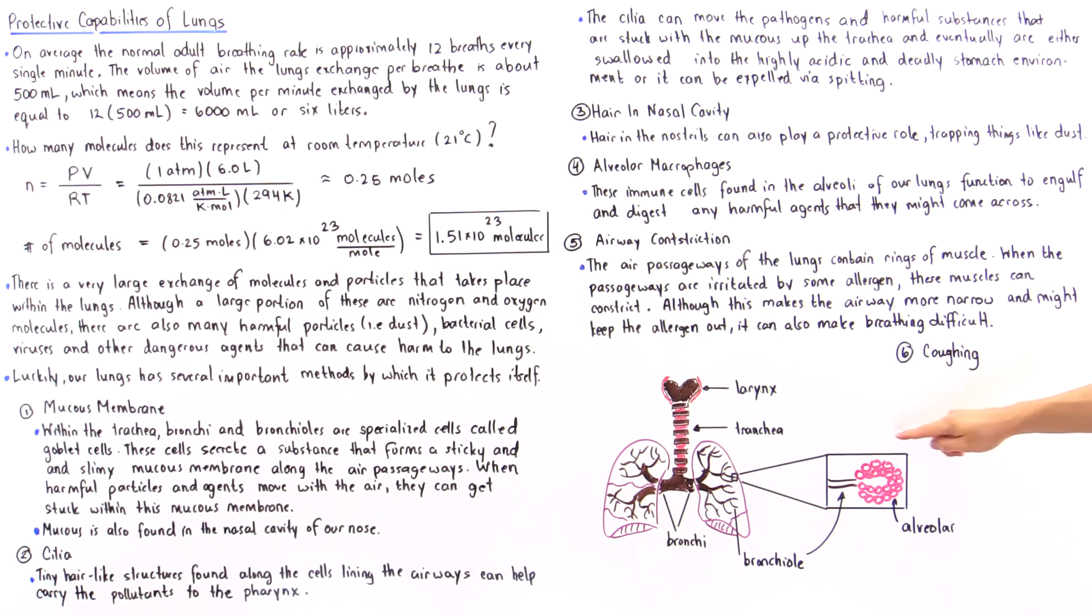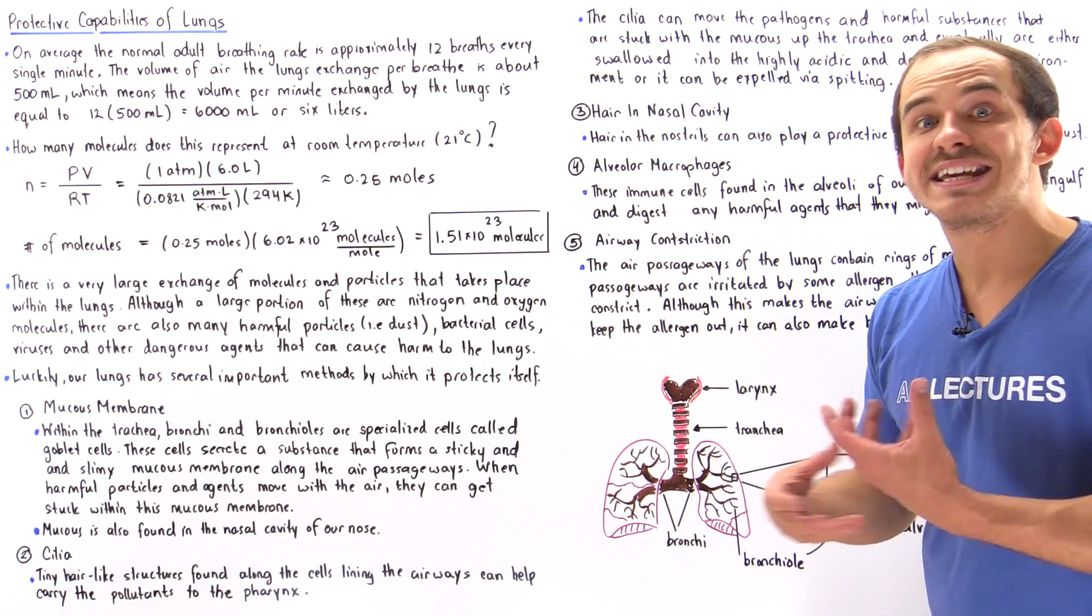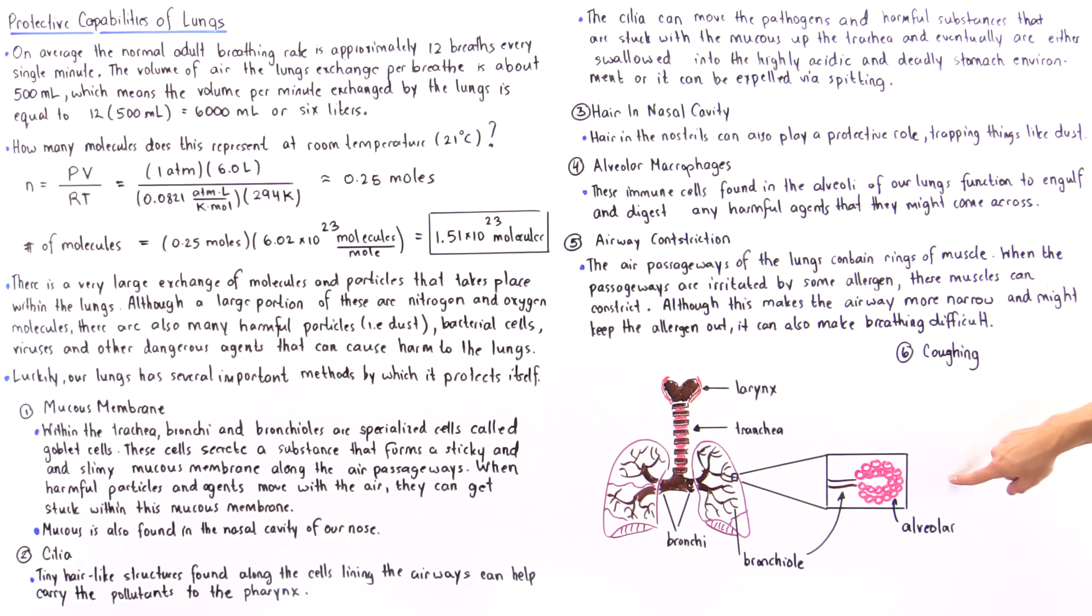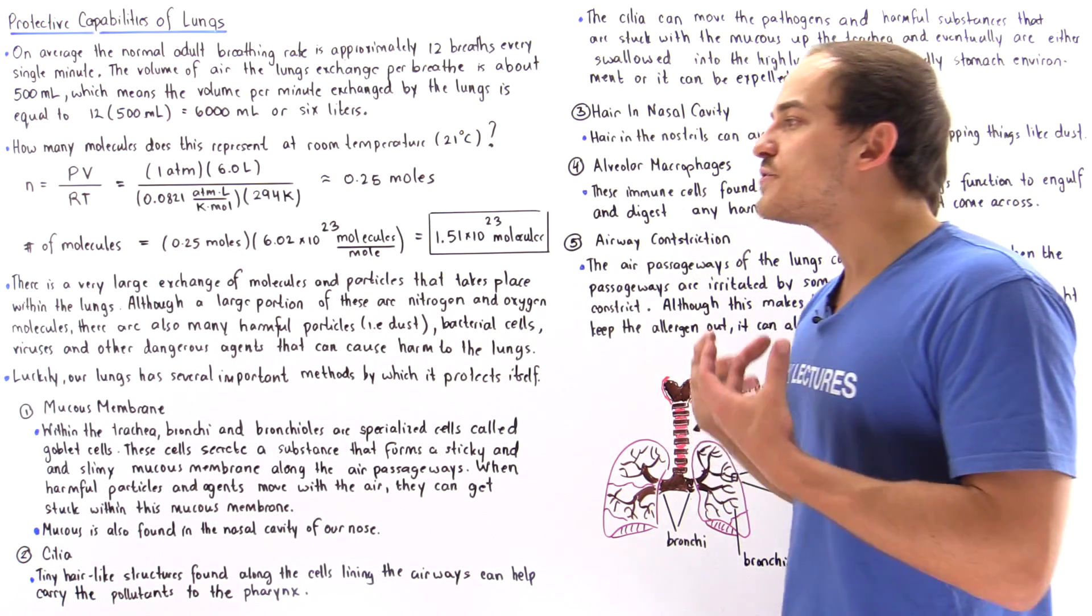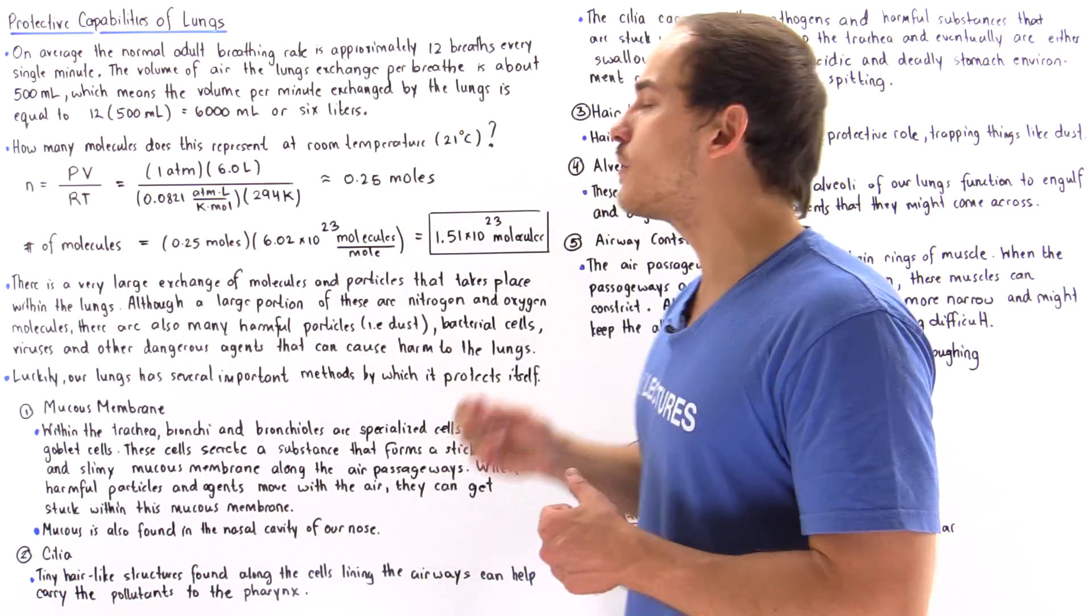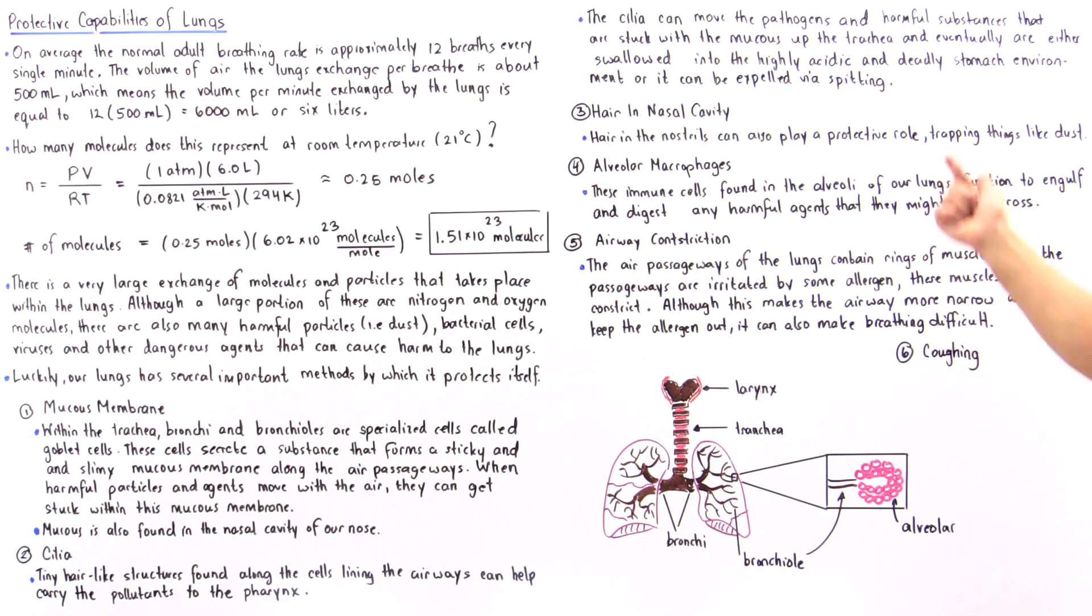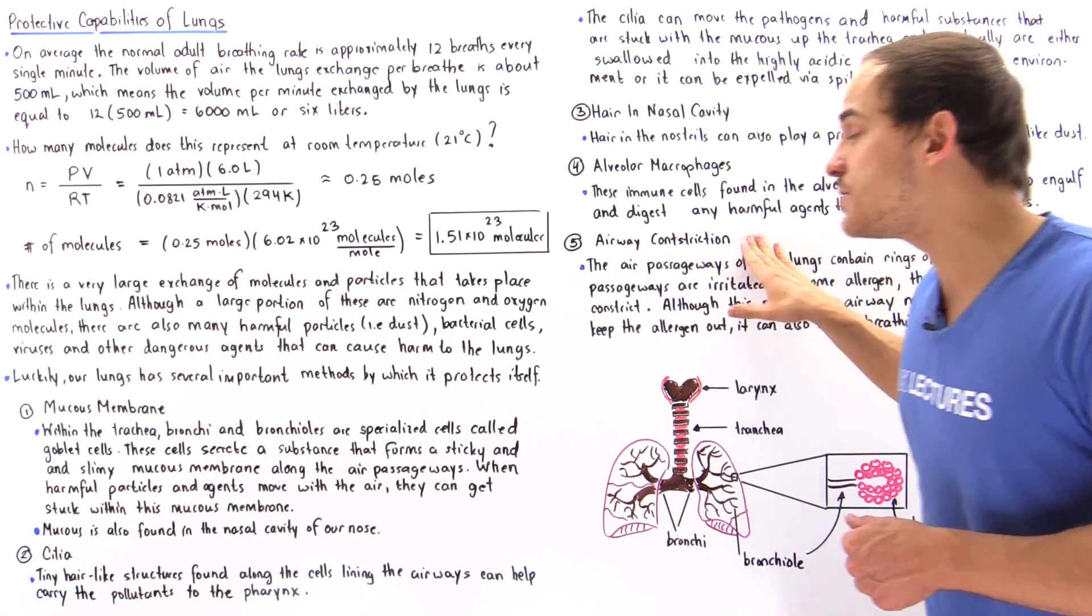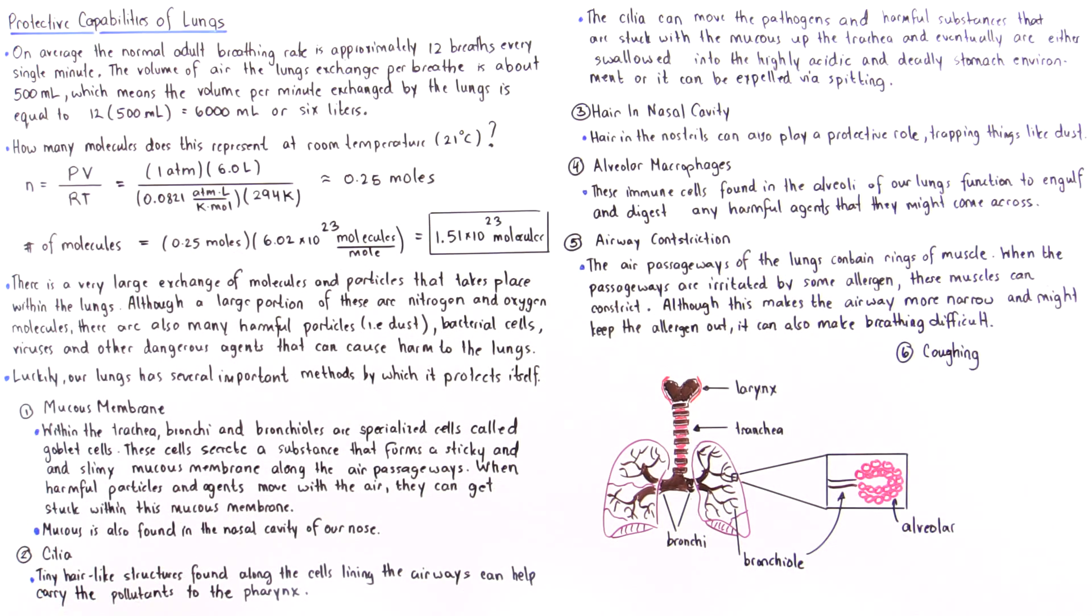If we check out this structure—these sac-like structures where gas exchange actually takes place within the alveoli of our lungs—we have specialized immune cells known as the alveolar macrophages. These are specialized cells that can engulf and digest any harmful agent and substance that the cell comes across.